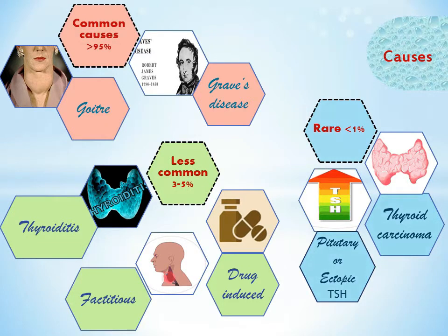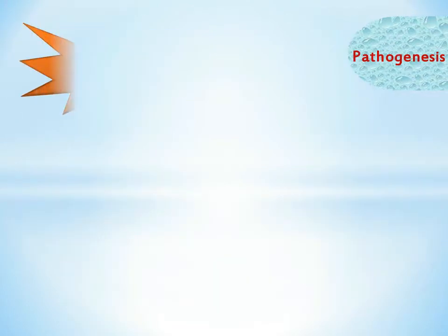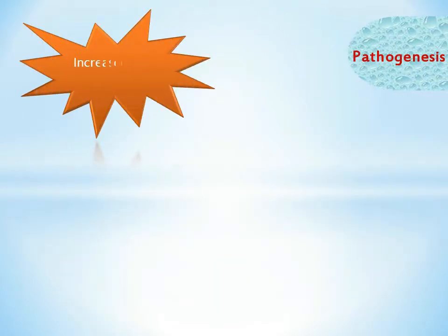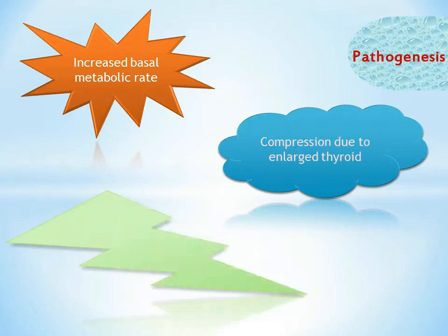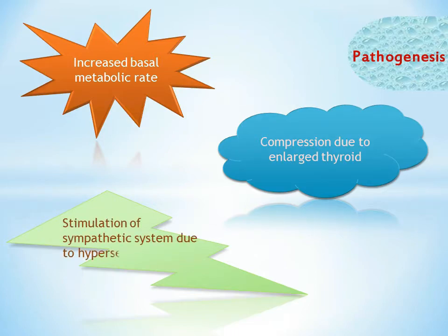Talking about the pathogenesis of hyperthyroidism: it develops insidiously. The clinical signs and symptoms develop due to an accelerated basal metabolic rate, stimulation of the sympathetic system due to hypersensitization, and compression due to enlarged thyroid. The trachea, esophagus, and recurrent laryngeal nerve may also be compressed.